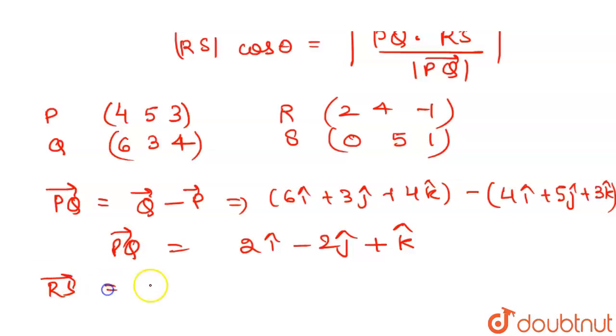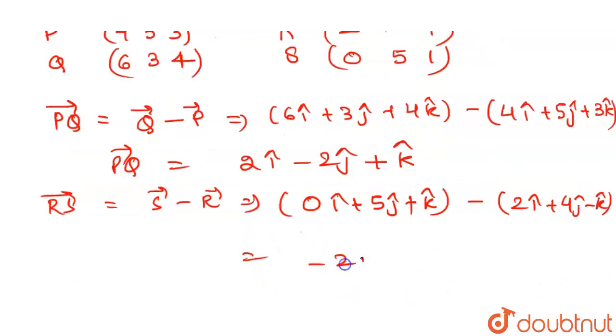Similarly, we will find the RS vector. RS vector will be S minus R, ending minus starting. So R is (2, 4, -1), we write 2i + 4j - k. S vector is (0, 5, 1): 0i + 5j + k. Then 0 minus 2 is -2i, 5 minus 4 is +j, and 1 minus (-1) is +2k. So RS = -2i + j + 2k.